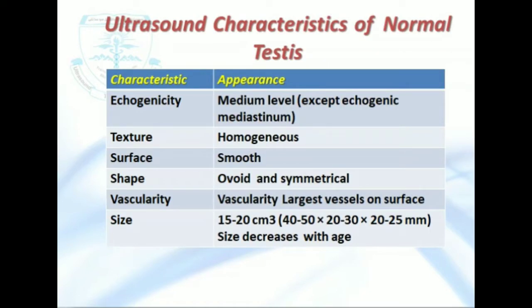The ultrasound characteristics of the normal testis are as follows. The echogenicity is at a medium level, while the mediastinum is echogenic. The echotexture is homogeneous. The surface is smooth, the shape is oval and symmetrical. The largest vessels are on the surface. The overall size is 45 x 25 x 22 x 23 millimeters and the overall volume is 15 to 20 centimeters cubed. It should be mentioned that the size of the testes decreases with age.